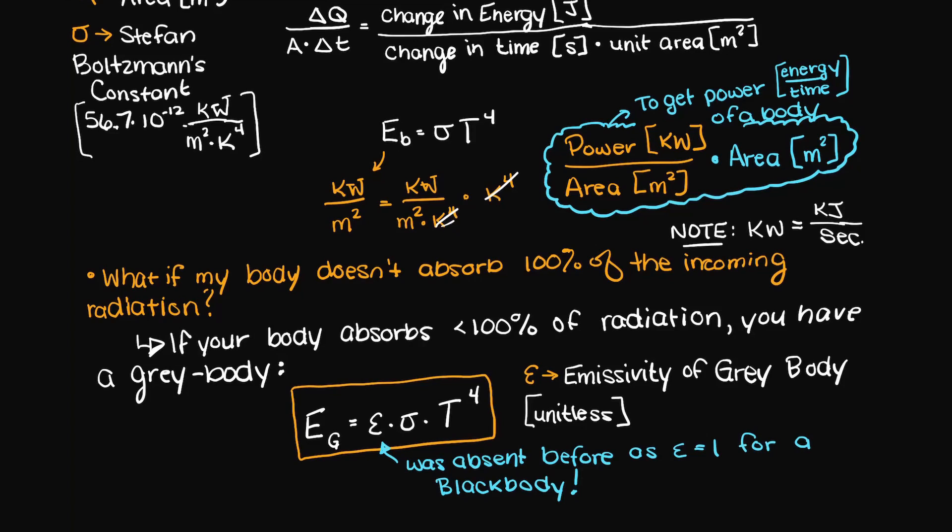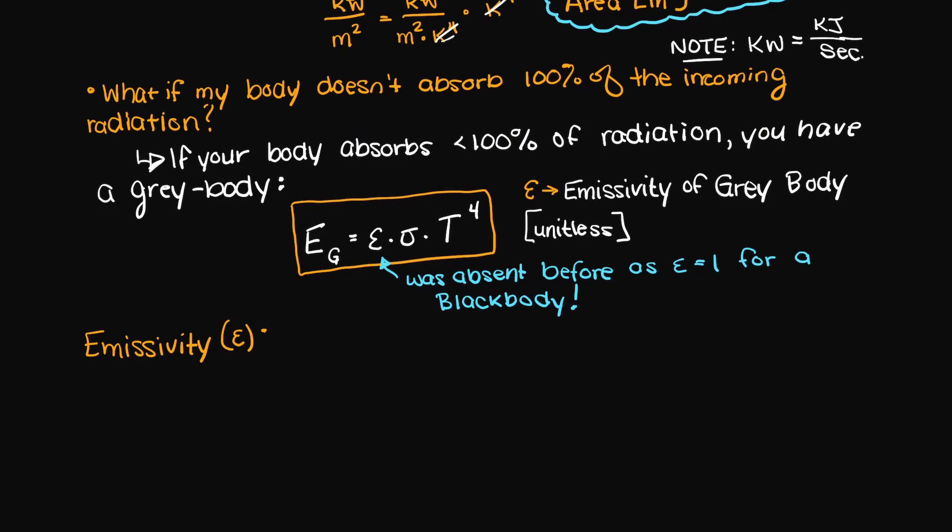So we are just going to take our equation that we had previously and just add in our term for emissivity. This term was absent from the earlier equation as the emissivity of a black body is simply equal to 1. The emissivity of an object is basically a measure of how effective an object is at emitting thermal radiation.